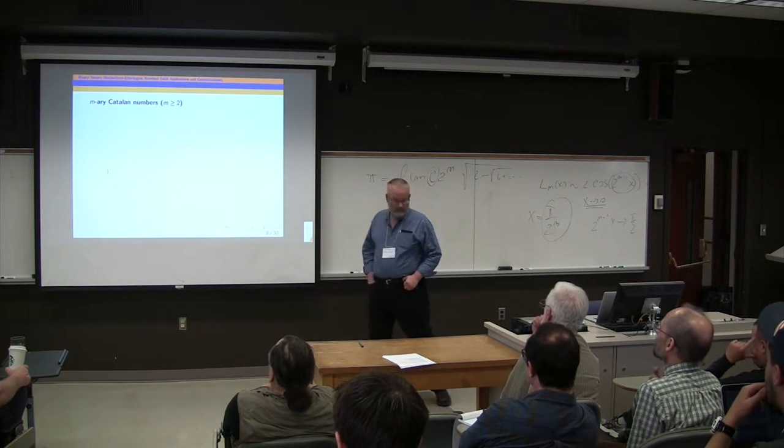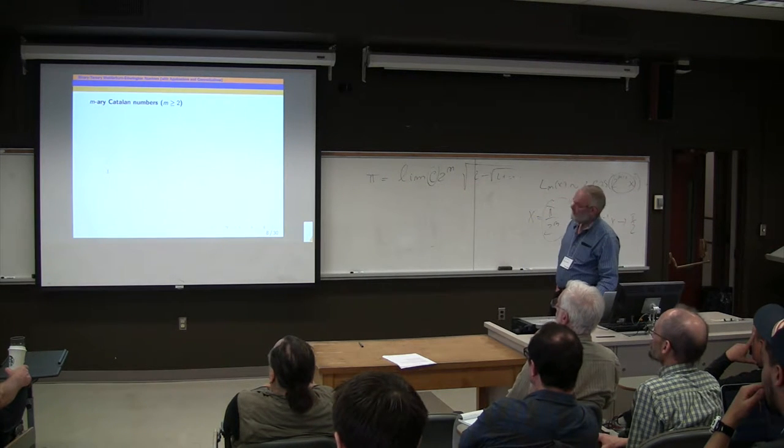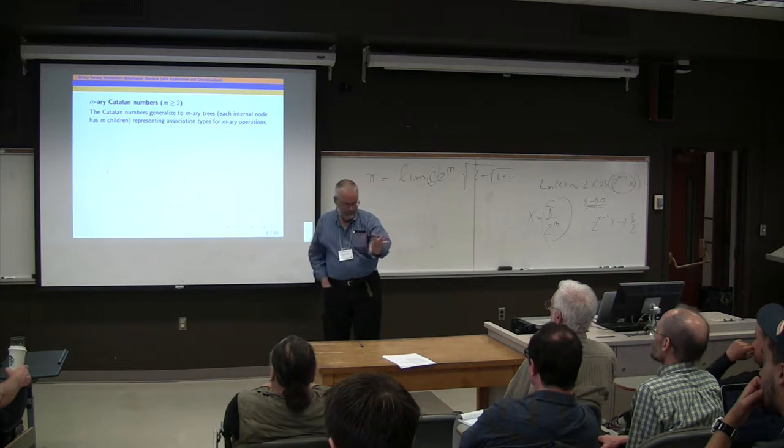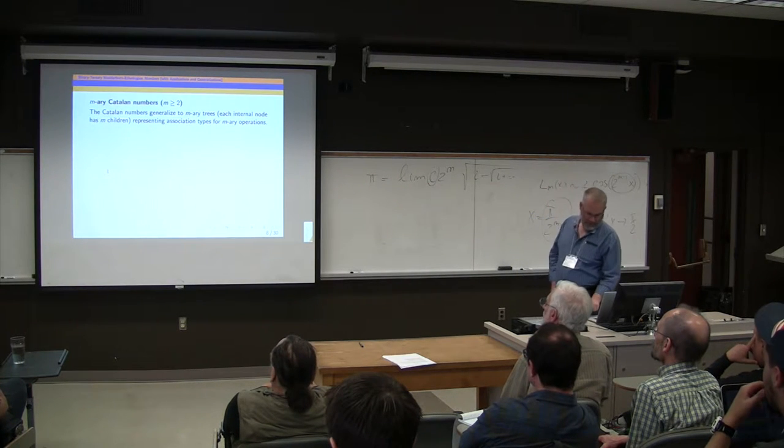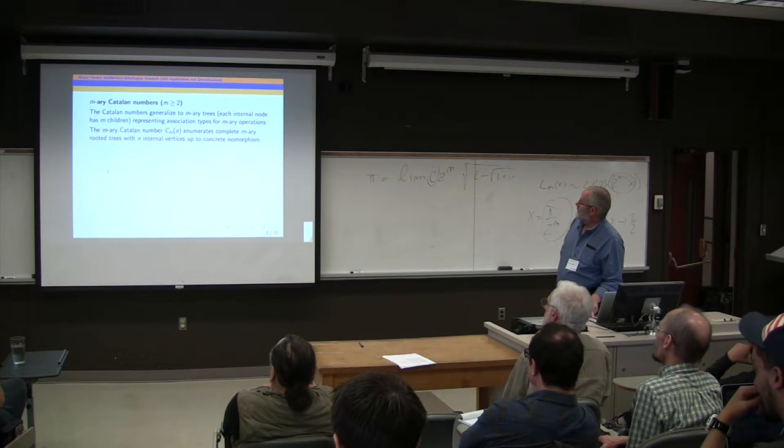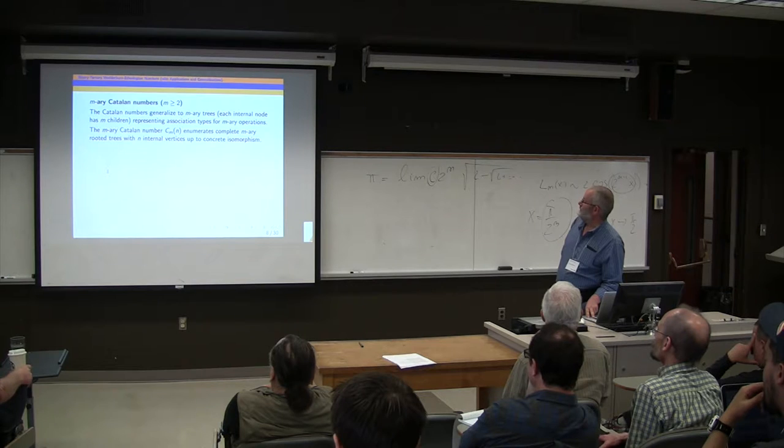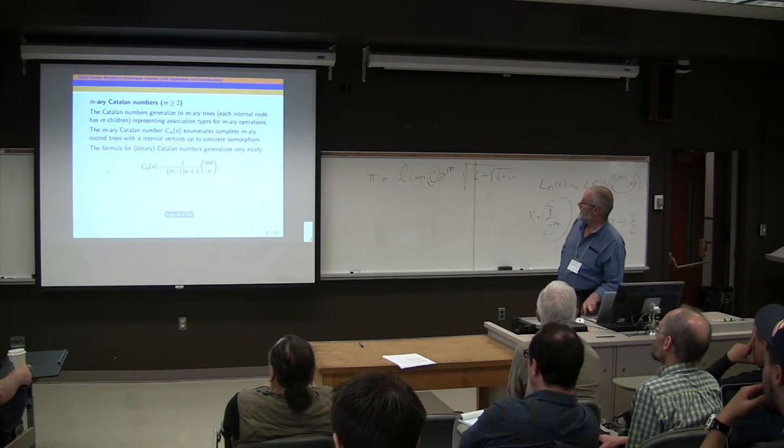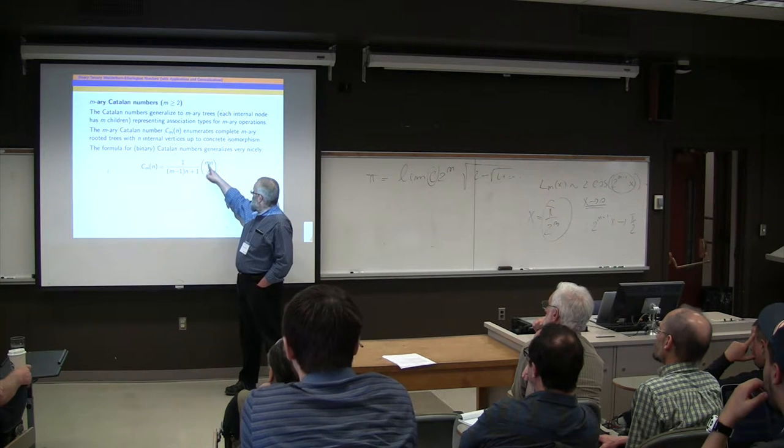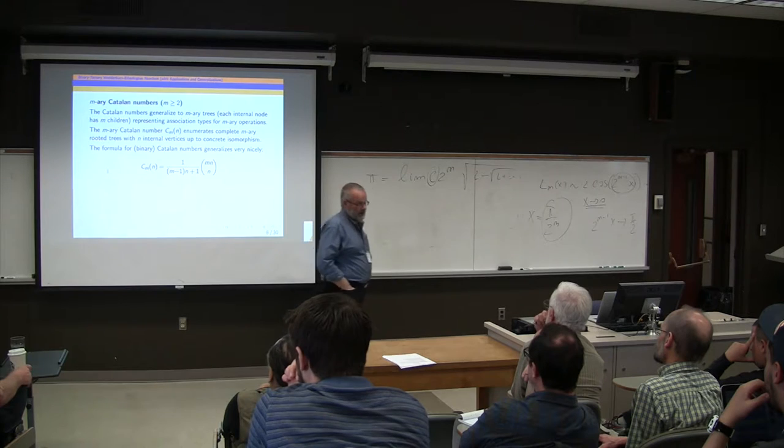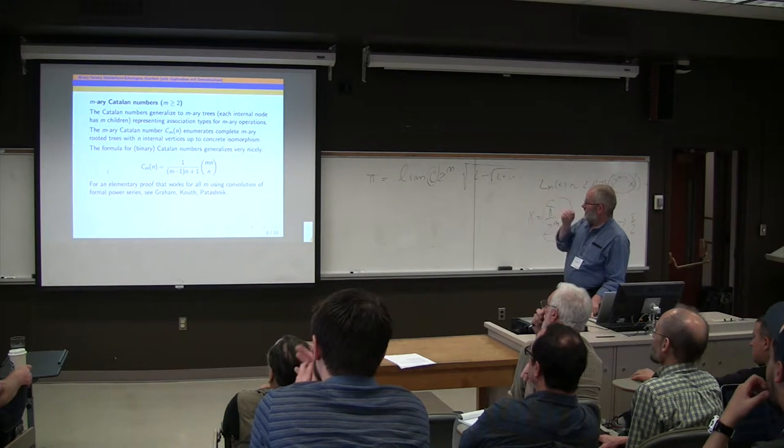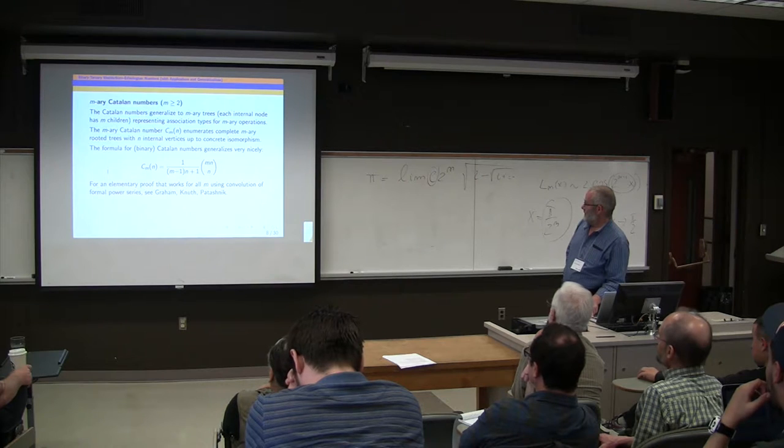What's less well-known is that there's a nice generalization of Catalan numbers to m bigger than or equal to 3. And that's just generalizing, replacing the binary trees with the ordinary Catalan numbers, replacing them by complete m-ary trees. So each internal node has m children. And you can think of those as representing association types for an m-ary operation. So complete m-ary rooted trees with n internal vertices up to concrete isomorphism. Again, n is the number of internal vertices. And there's a very nice natural generalization of the binomial formula for binary Catalan numbers. Just replace the 2 by m and put a coefficient of m minus 1 in front of the n in that denominator.